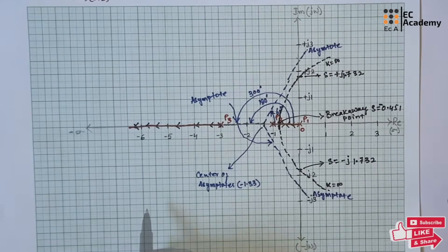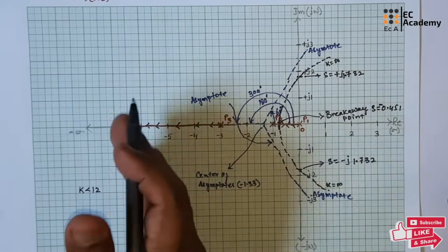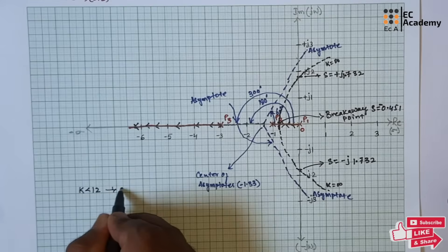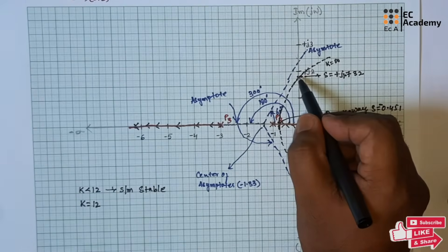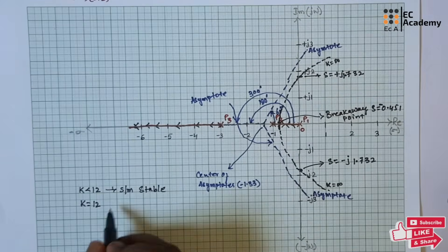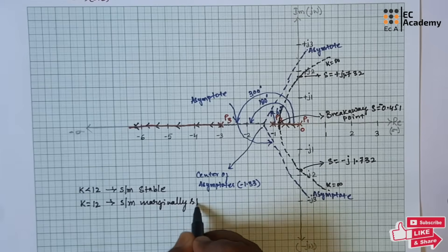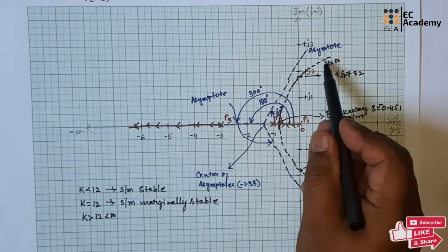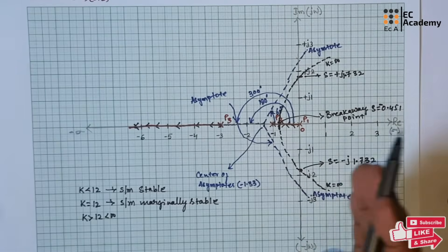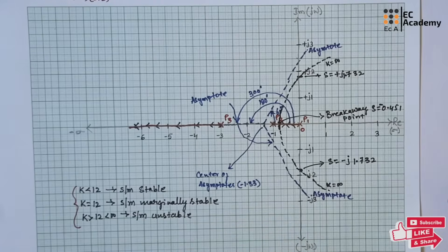To comment on stability: when K is less than 12, all poles are on the left-hand side of the S-plane, so the system is stable. When K equals 12, the root locus branches are exactly on the imaginary axis, so the system is marginally stable. When K is greater than 12, the root locus branches move to the right-hand side of the S-plane, so the system is unstable. This concludes the problem on root locus. Hope you have understood the topic. Thank you.